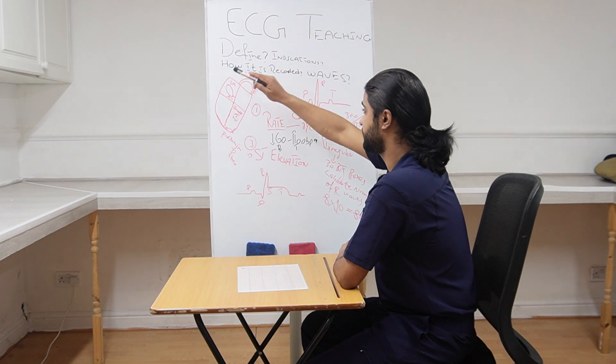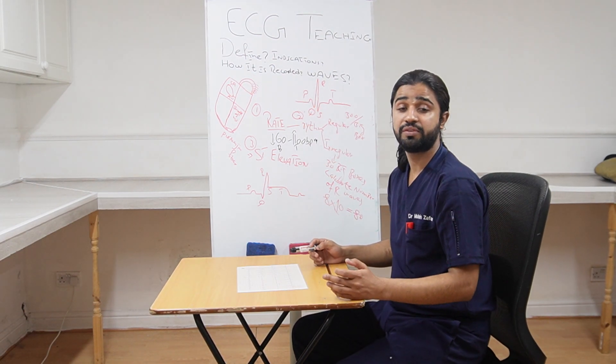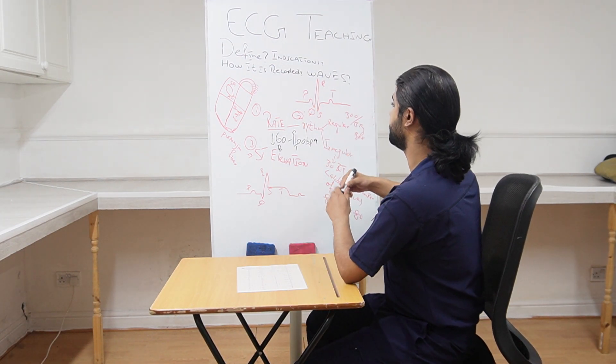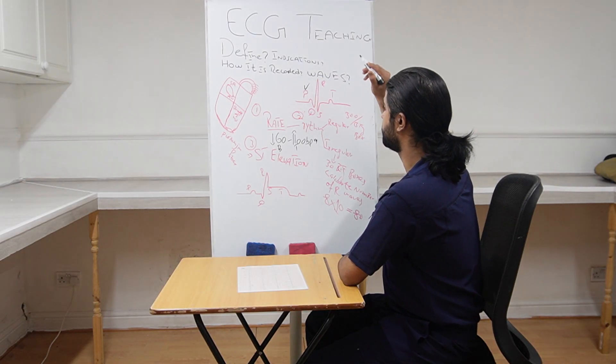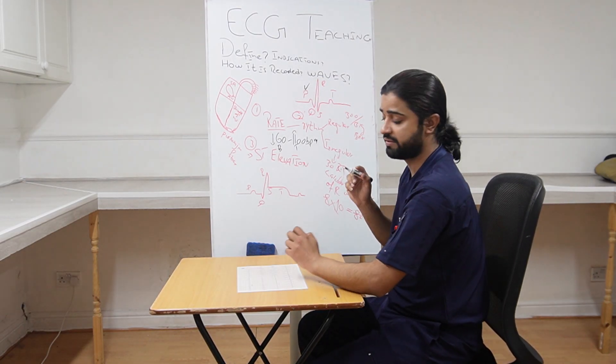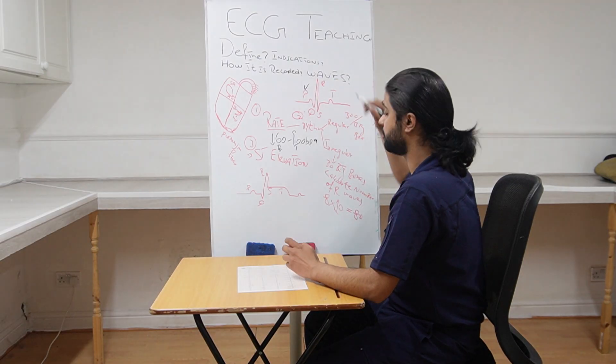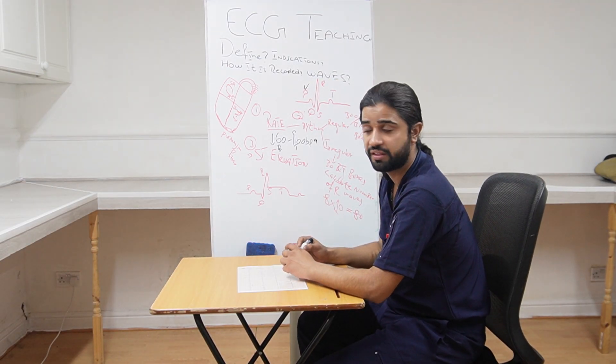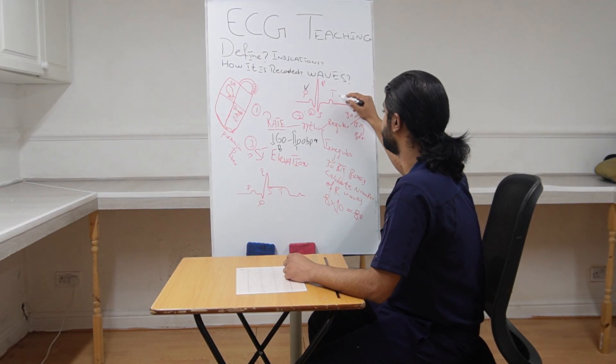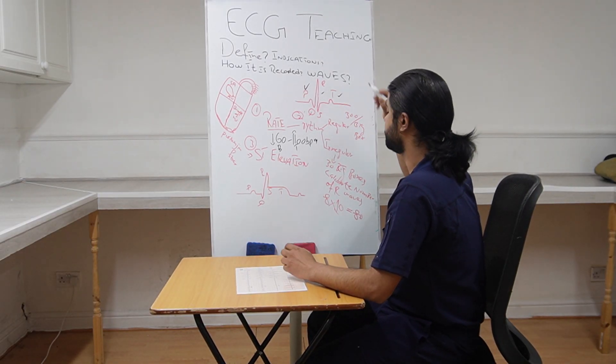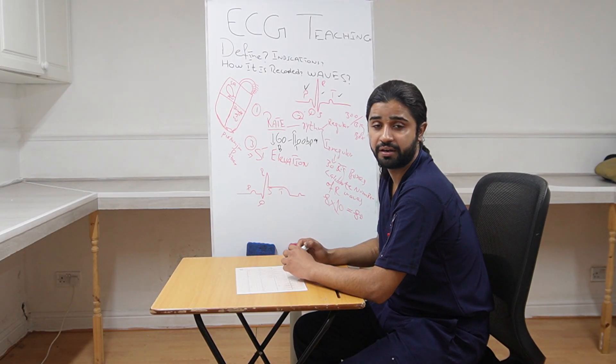So this spark that is initiated here at the SA node, it causes the contraction of the atria and this forms the P wave. Contraction of the atria forms the P wave. Next doctor, this QRS complex, it forms by the contraction of the ventricle. And this T wave forms by the relaxation of the ventricle.